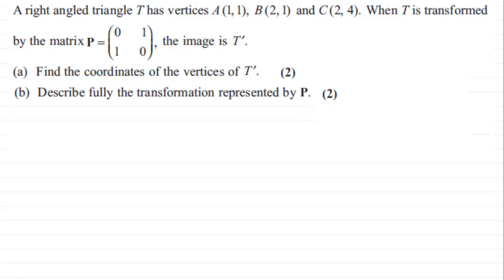And then we've got to describe fully the transformation represented by P. Okay, so if we're going to do this—you don't have to do this—but I've just got the triangle T roughly sketched out here where A is at (1,1), B is at (2,1), and C is at (2,4).